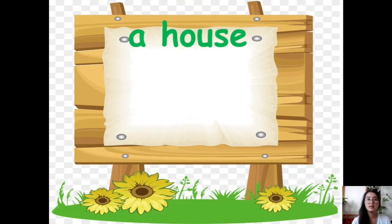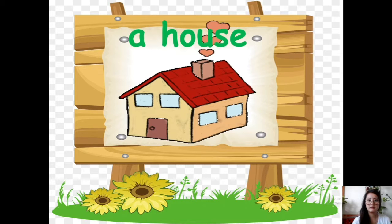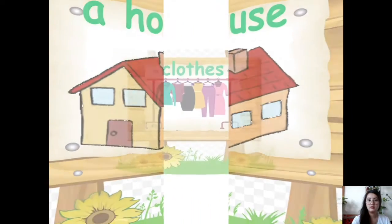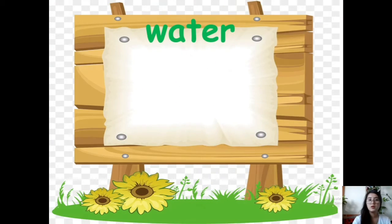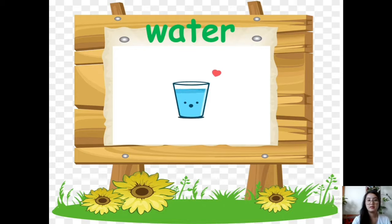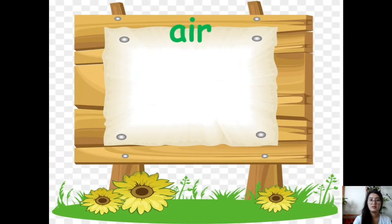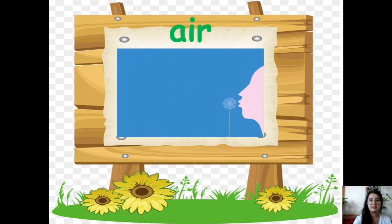For example, a house. We need a house to survive. Next, clothes. We need clothes to survive. The next one is water. We need water to survive. Air — we need air to survive, air to breathe.